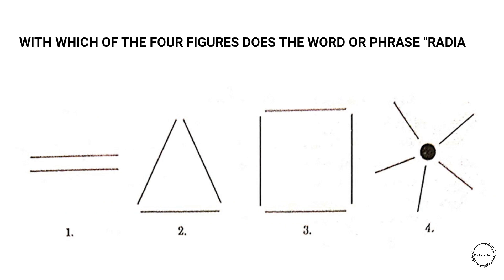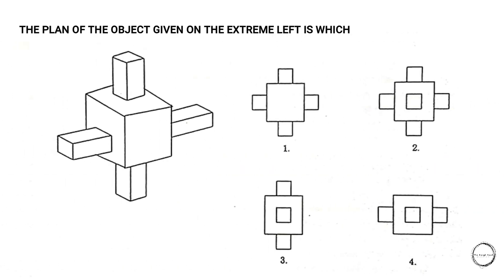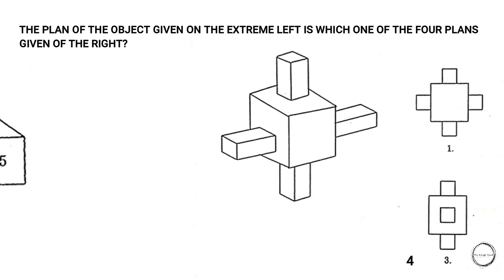With which of the four figures does the word 'radial' best match? The answer is option four. Moving on: the plan of the object given on the extreme left is which one of the four plans given on the right? You can see two arms placed horizontally, and that is why the answer is four.